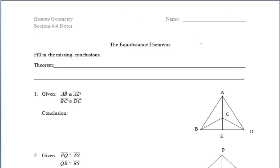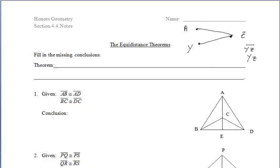Let's first start off by talking about the distance between two points. If I give you point Y and point Z, the distance between those two points is going to be the shortest path between them — the length of segment YZ. Now, if I gave you some other point, let's say point A, and segment YZ is congruent to segment AZ, what that means is those two points, A and Y, are each equidistant from point Z.